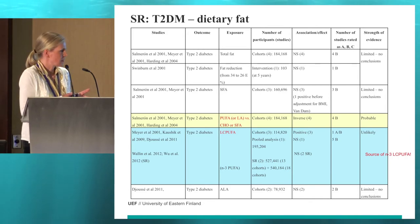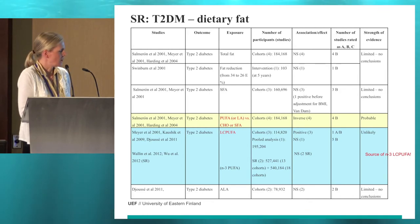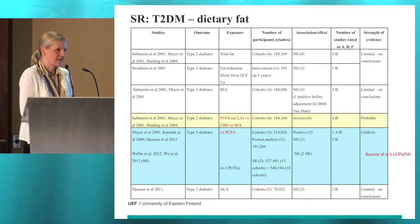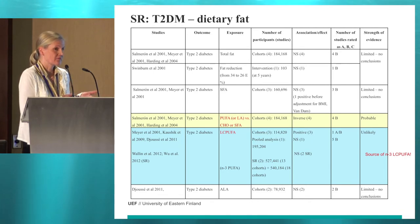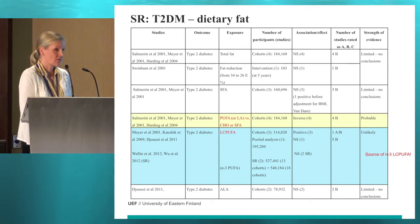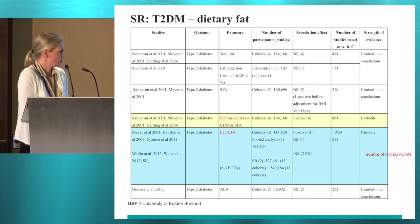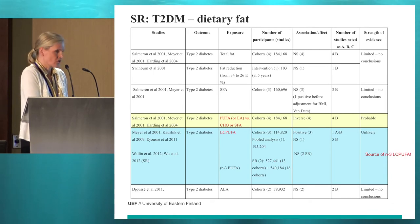When we look at those studies where subjects had gotten mainly the long-chain omega-3 fatty acids from fish or supplements, there were studies that showed even increased risk of type 2 diabetes. But when these fatty acids were received from fish — so the subjects had been eating fish — then there was no increased risk, and actually in some studies there was protection against type 2 diabetes. So we have to take into consideration the source of long-chain omega-3 fatty acids.